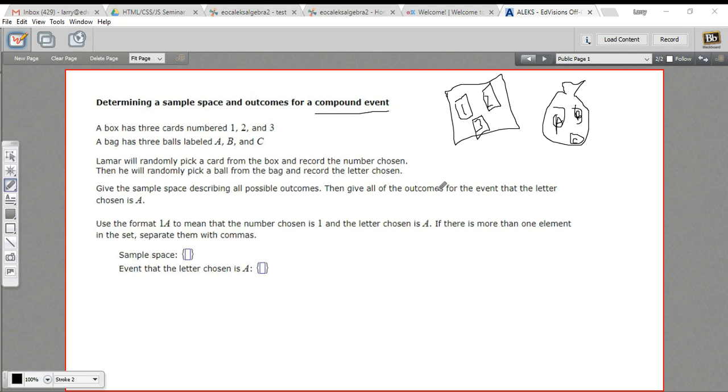In the past, when we wrote the shorthand to describe an event, like say picking the card one, you'd just write it as a one. You'd put it in these curly brackets for that event. When we do a compound event, we just usually stick those numbers or letters together. So if I picked a one and then a B, I would just write one B.